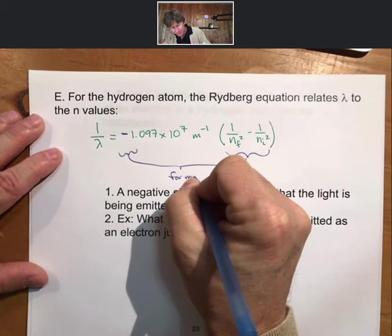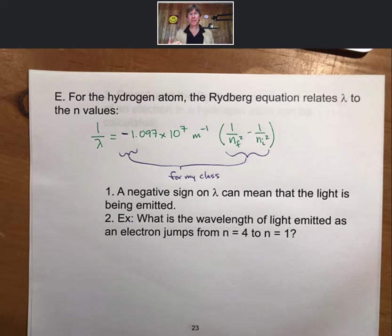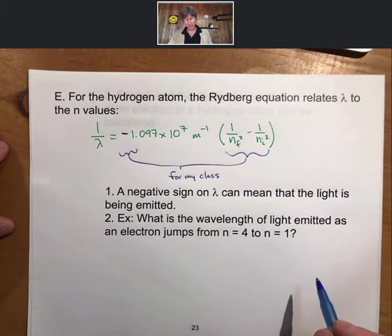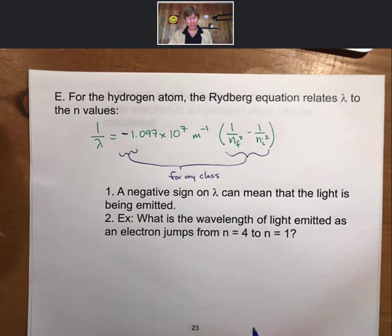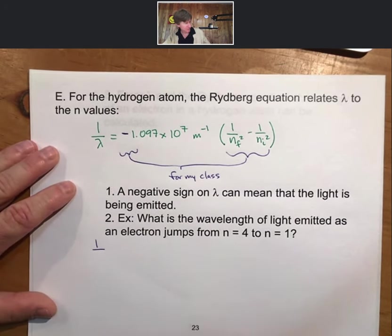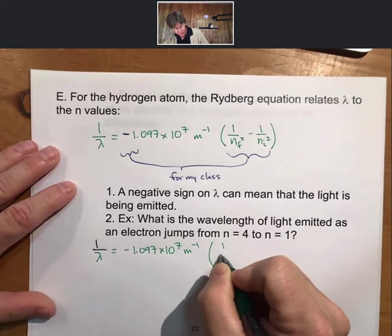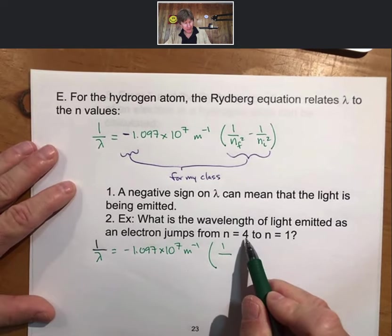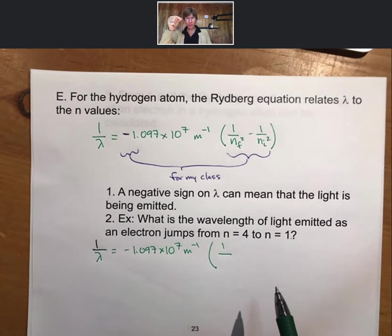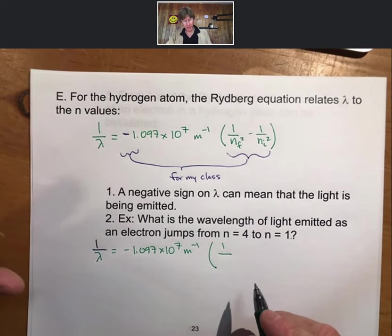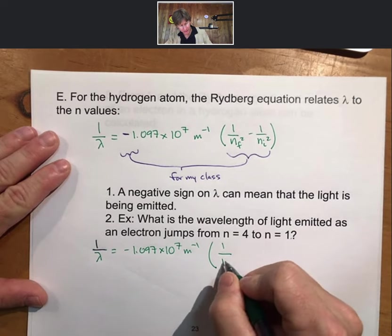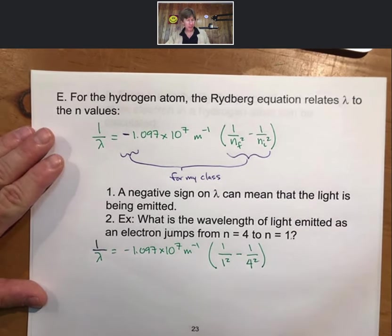You'll see slightly different versions of the Rydberg equation in other classes, but for my class the negative sign on wavelength means light is being emitted. The question is: what is the wavelength of light emitted as an electron jumps from N equals 4 to N equals 1? From 4 to 1 means it is getting closer to the nucleus, so light will be emitted. N_f equals 1 is the final state, N_i equals 4 is the initial state.